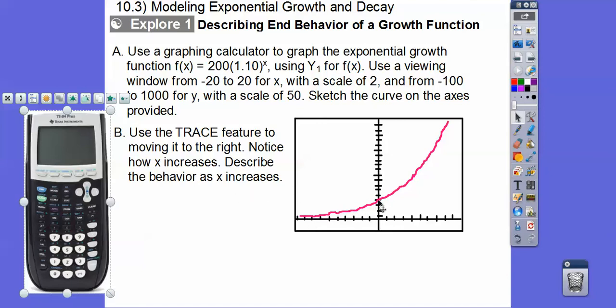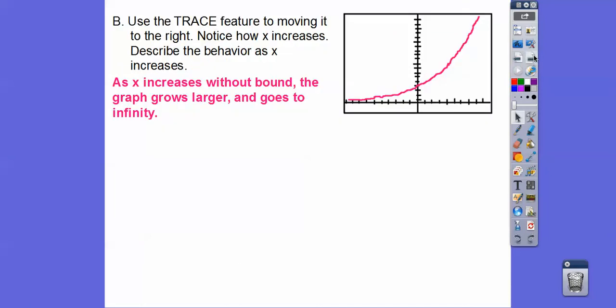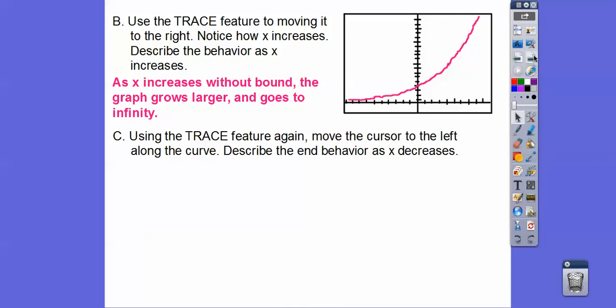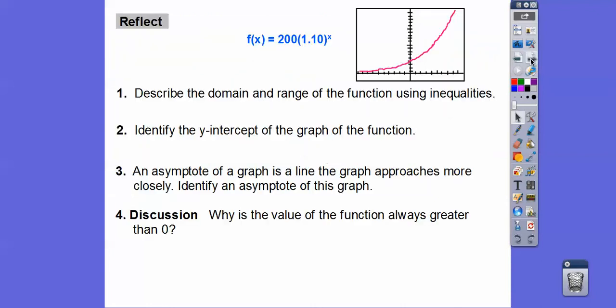So it says describe the behavior. So what you can see is, as X goes to the right, as X gets bigger, then Y gets bigger. So something like that. As X increases, then the graph increases and goes larger and larger and larger. And then move your cursor to the left and describe your behavior. So as X goes down, the graph approaches zero. And you'll see Y getting smaller and smaller and smaller and smaller when you do that right there.